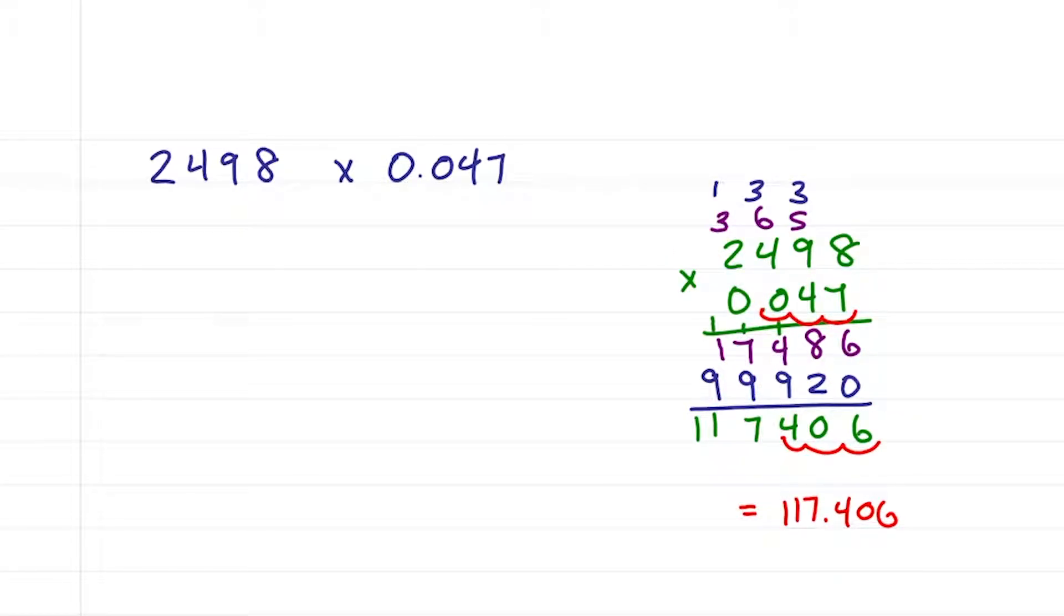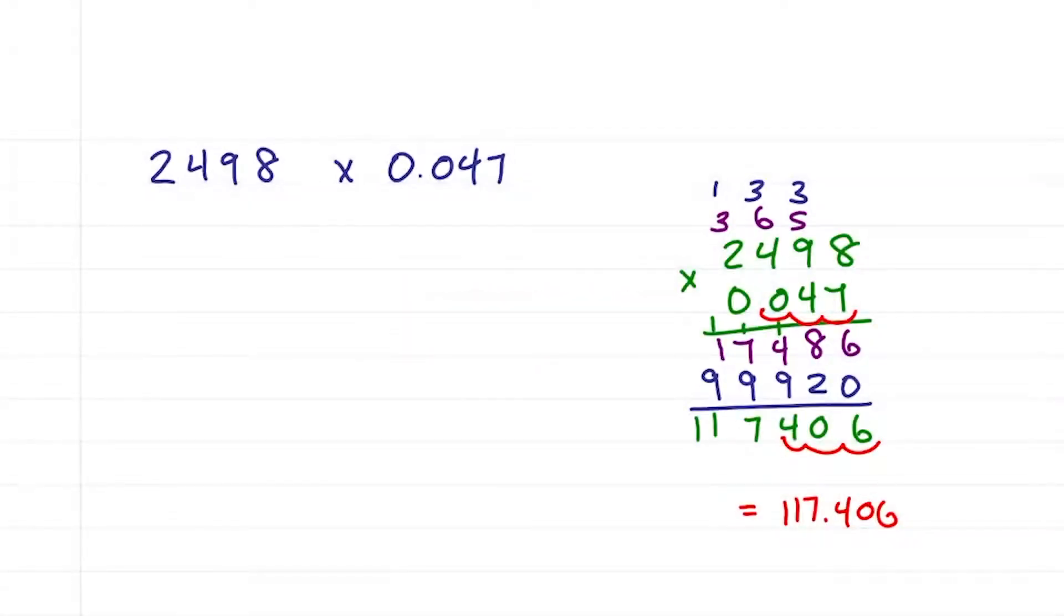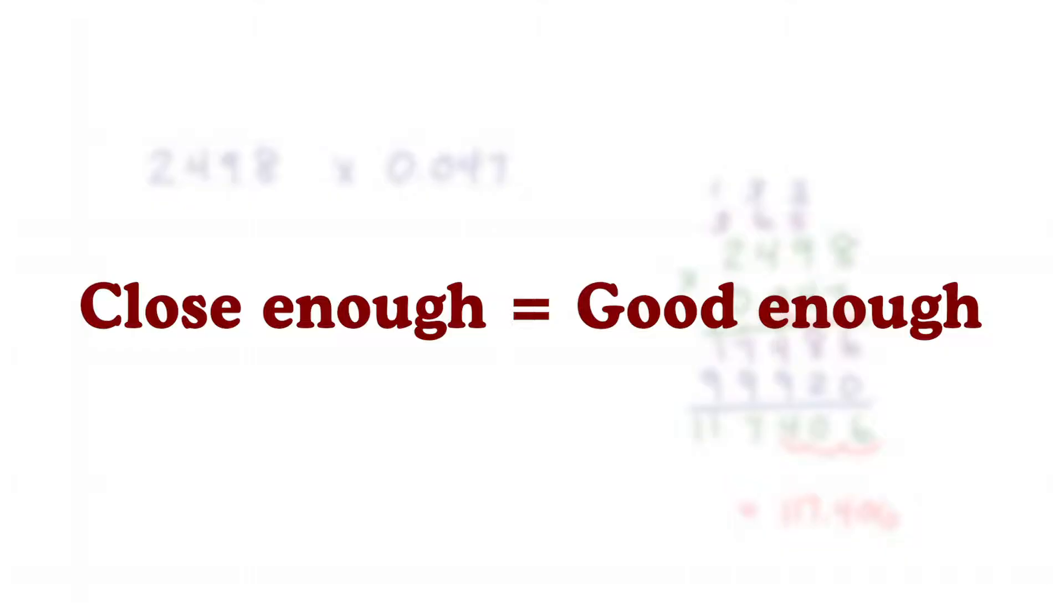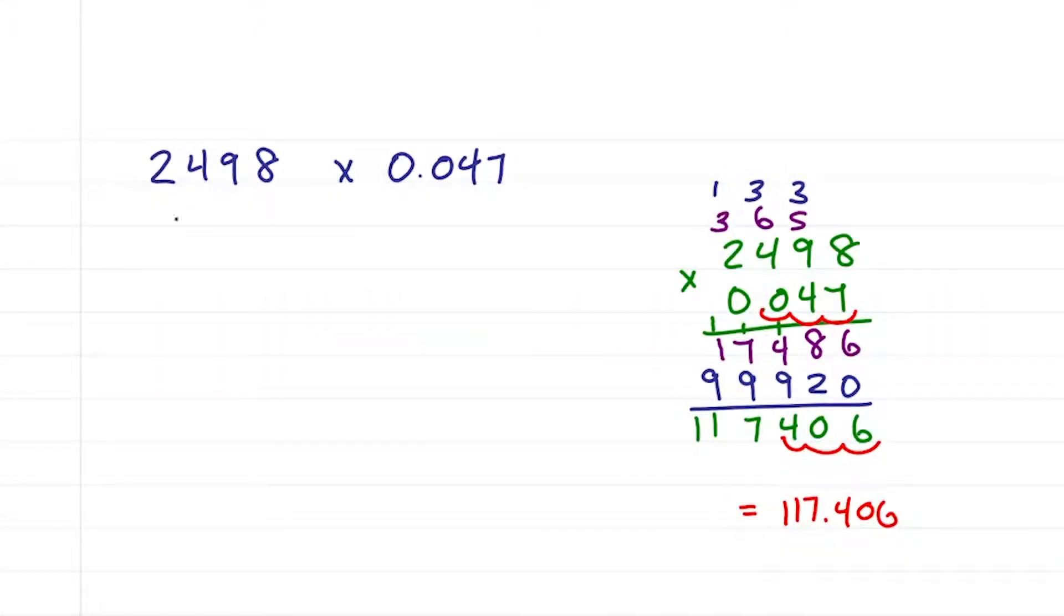Then there's the decimal trick. But first, rounding is your best friend because on the MCAT, close enough is good enough. We'll round 2498 to 2500 and 0.047 to 0.05.